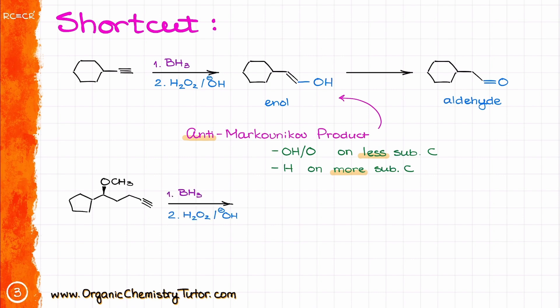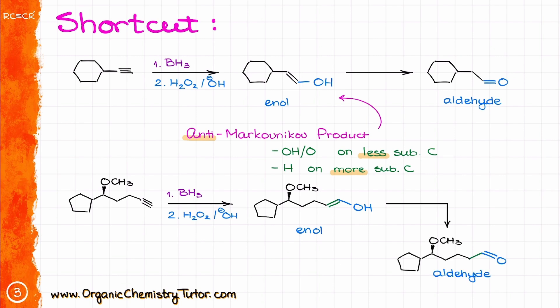Here is another example. I'm going to do the same trick here as well. First, I'll redraw this molecule but now with a double bond instead of a triple bond, and I will zigzag it right away. I will add the OH group to the less substituted atom — this gives me my enol form — and then I will convert that into the corresponding aldehyde. Easy peasy.